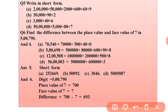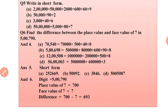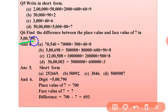Question 5: Write in short form — you can add the expanded parts and write the short form directly, as you have done these types of questions previously. Question 6: Find the difference between the place value and face value of 7. The place value of 7 is 700 and the face value is 7, so the difference is 700 minus 7, which equals 693.